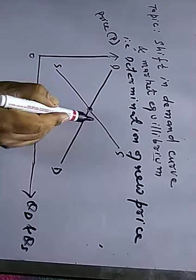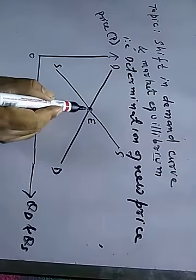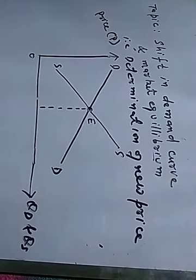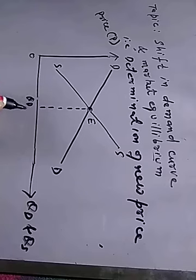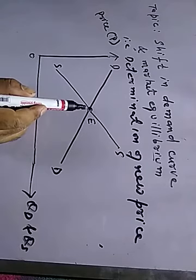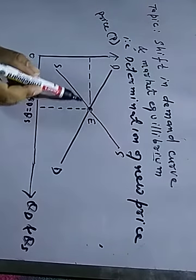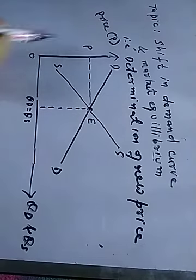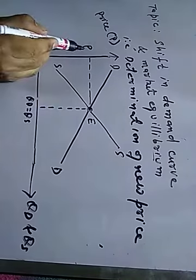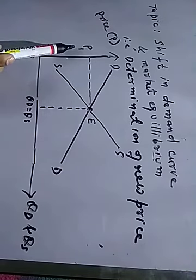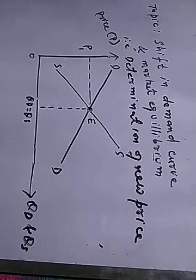This is the point of intersection common to both the demand and supply curves — suppose this is point T, the point of equilibrium. By drawing a perpendicular to the horizontal axis, it shows quantity demanded and quantity supplied at this equilibrium point. Quantity demanded equals quantity supplied, and this will be the equilibrium price P1 shown on the vertical axis.